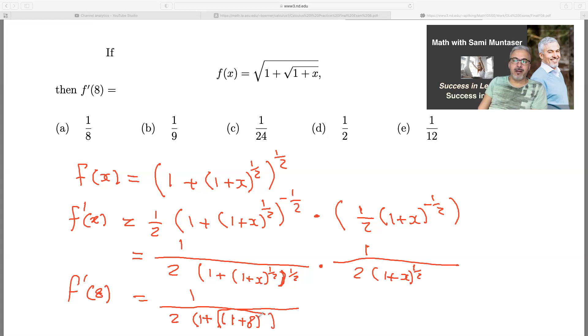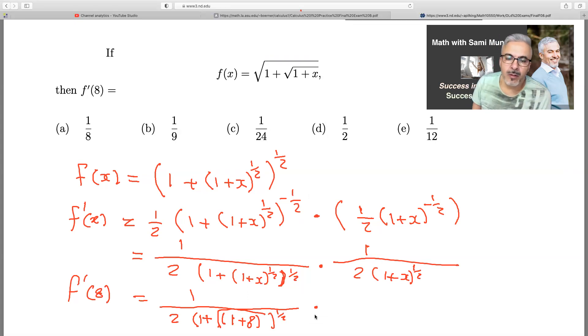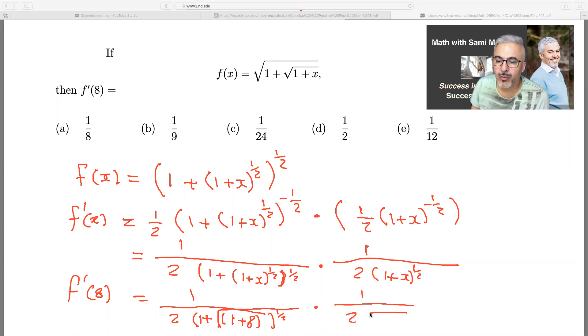Times one. One over two, and then the square root of one plus eight. Which equals now.